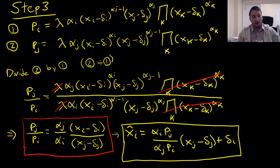From this equation, we're able to derive our intermediate bundle, which is as follows: x i hat is equal to alpha i times pj all over alpha j times pi, times x j minus delta j plus delta i.